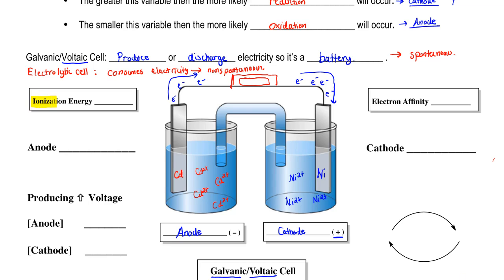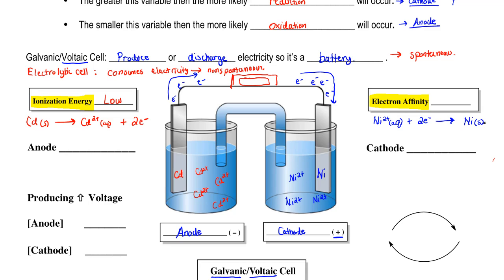There are two periodic trends to keep in mind: ionization energy and electron affinity. Cadmium is the anode undergoing oxidation — ionization energy is the energy to remove an electron. The cadmium solid loses electrons to become Cd²⁺, and this is spontaneous, so the energy required is very low. On the other end, electron affinity is the energy involved in adding an electron. Nickel 2+ ion gains two electrons to become nickel solid. This is spontaneous, so nickel's propensity to gain those electrons is very high — electron affinity here is high.